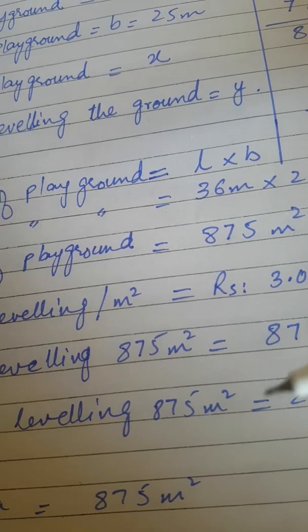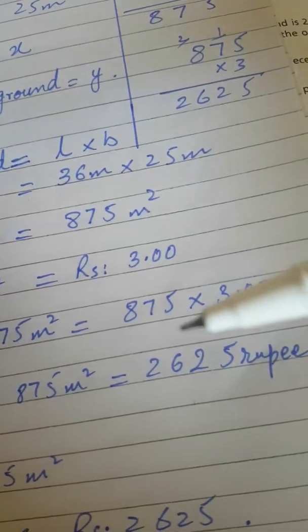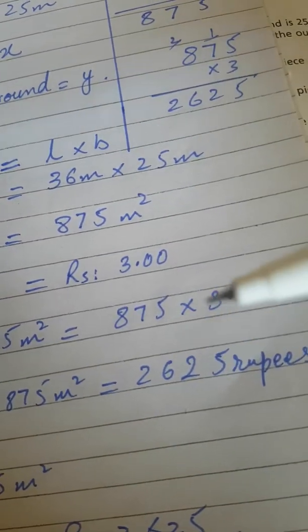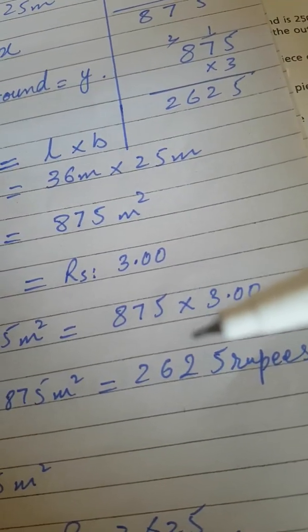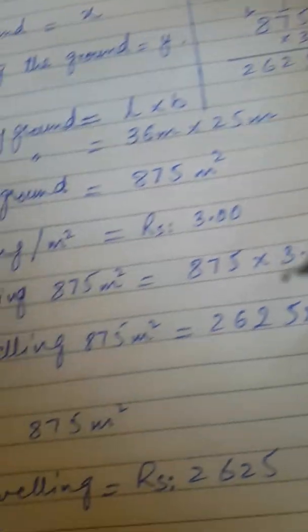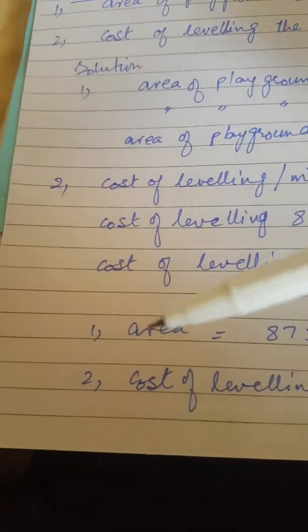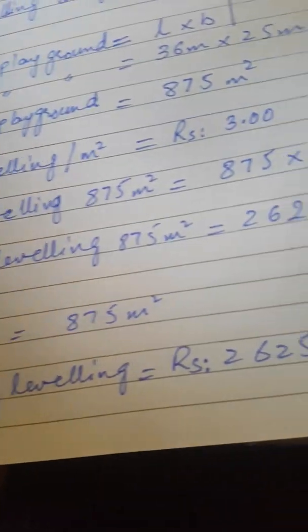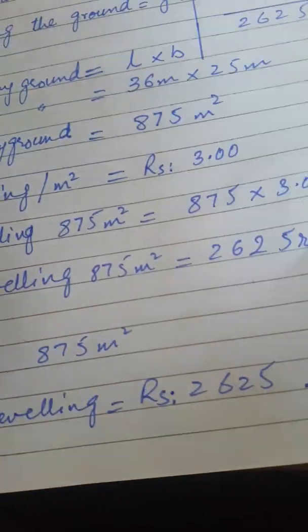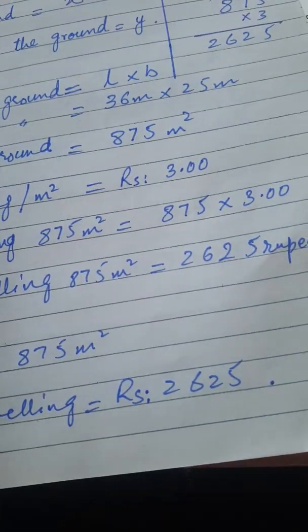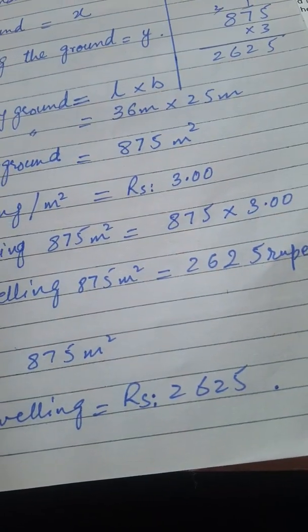The cost of leveling 875 meter square is 2625 rupees. Both findings — the area and the cost — are now complete. Please do this question again in your notebook.